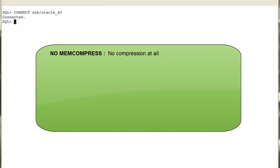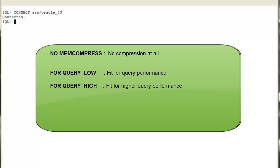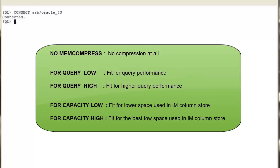There are three compression levels in the IM column store using different compression algorithms. The first one is BASIC, which does no in-memory compression at all. The second is FOR QUERY, which uses an in-memory compression algorithm fit for better query performance rather than lower space usage in the IM column store, and this is the default when only MEMCOMPRESS is defined as a clause for the segment. The third is FOR CAPACITY, with two levels: low and high.